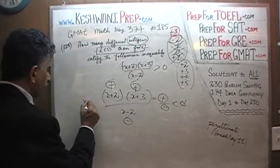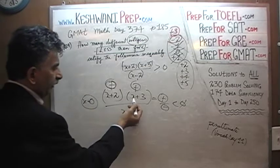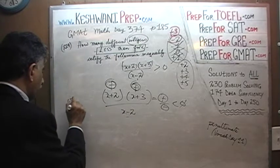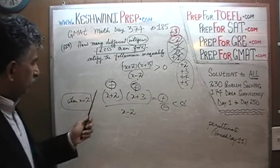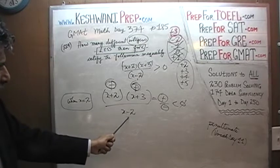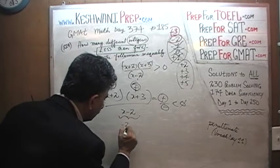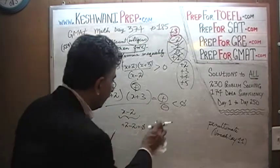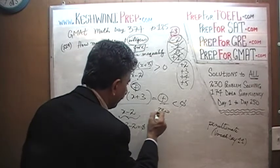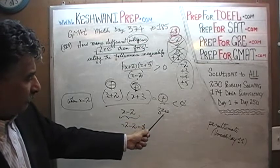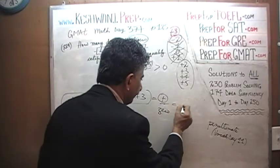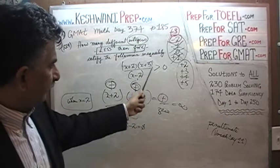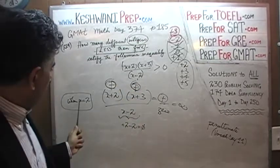When x equals 2, x+2 is positive and x+3 is positive. However, at the bottom, x−2 gives 2 minus 2, which equals zero. The numerator is some positive quantity but the denominator is zero, making the whole expression undefined — it becomes infinite. So x = 2 does not work.